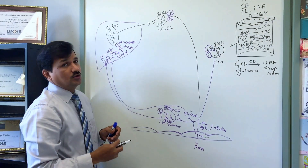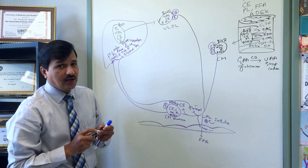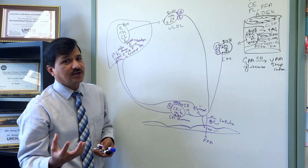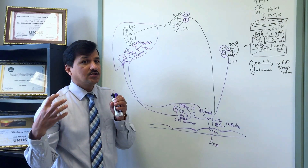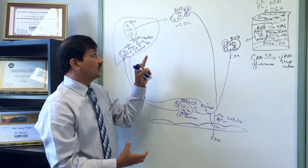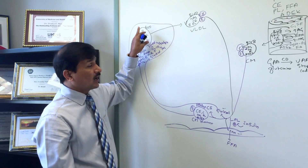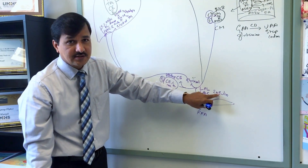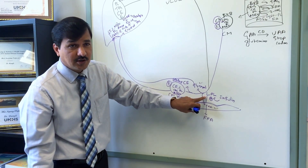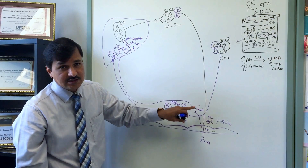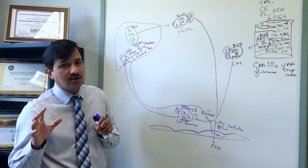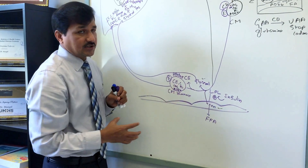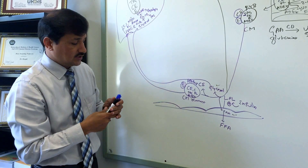With LPL action, triacylglycerol is constantly broken down into free fatty acids and glycerol. Note that VLDL synthesis also occurs under fasting conditions: lipolysis in adipose tissue floods the liver with fatty acids, which are esterified to make triacylglycerol and then VLDL. Under fasting, insulin levels are low, reducing LPL activity and slowing VLDL metabolism. Depending on insulin levels, LPL degrades triacylglycerol into fatty acids and glycerol in both fed and fasting states.